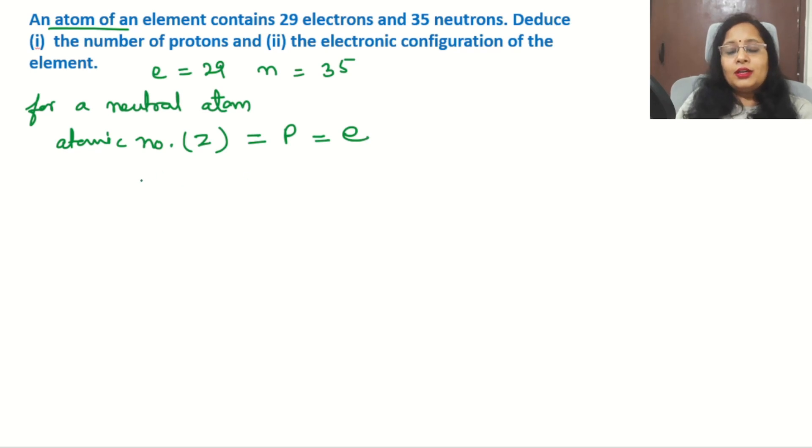So here it is given electrons are 29. So first part: number of protons should be 29, as the number of electrons. First part clear. Now come to second part.